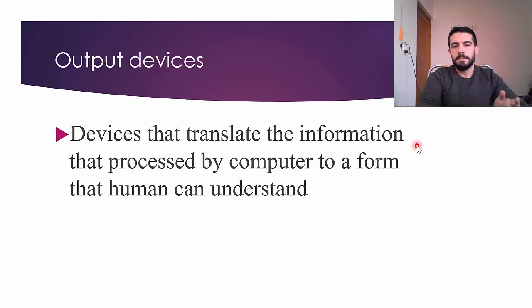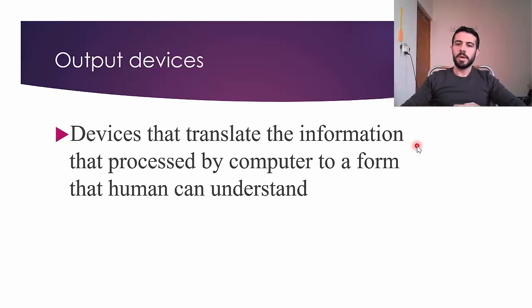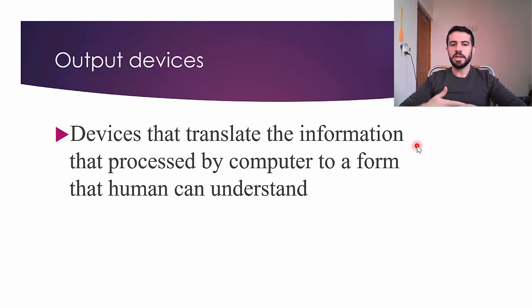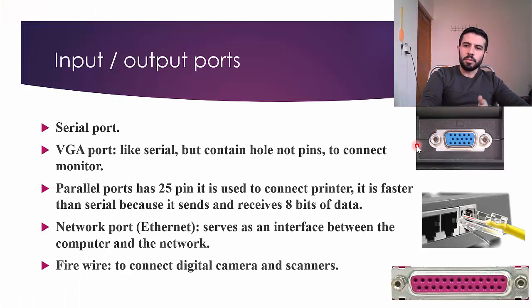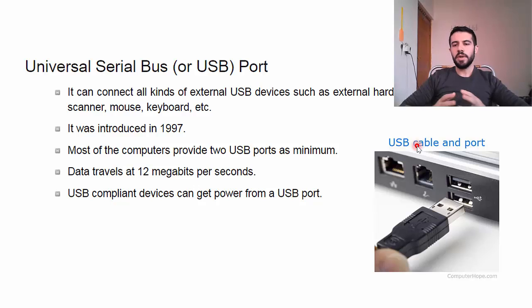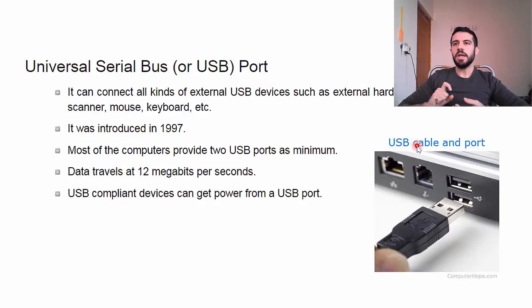Input devices allow users to insert data — like keyboards. Output devices translate information processed by the computer into a form humans can understand. When you type on a keyboard the data is converted to machine language (zeros and ones) for the computer; the output does the reverse, translating it back so humans can read text, images, and numbers on screen. Input/output ports include serial ports, VGA ports, network ports, and the USB — Universal Serial Bus — port, which is very important because it connects many kinds of external devices like hard disks, printers, and scanners.